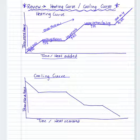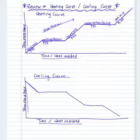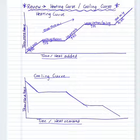Next, for the cooling curve, we're still plotting temperature versus time, but we notice now we have a downward curve. Our three slanted lines are going down — there is a decrease in temperature on this cooling curve.